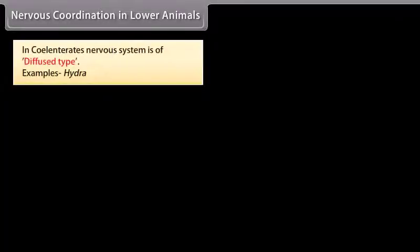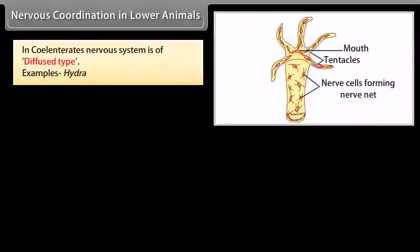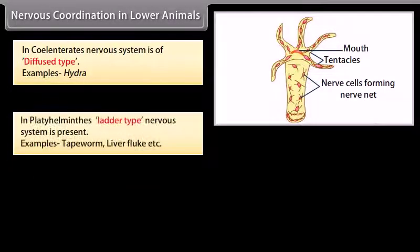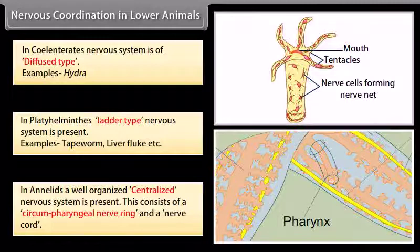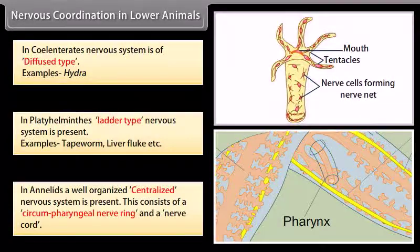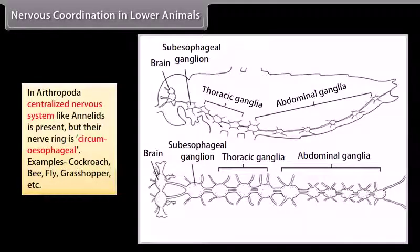In coelenterates, the nervous system is of diffused type — example: Hydra. In platyhelminthes, a ladder-type nervous system is present — examples: tapeworm, liver fluke. In annelids, a well-organized centralized nervous system is present, consisting of a circumfaryngeal nerve ring and a nerve cord. In arthropoda, a centralized nervous system like annelids is present, but their nerve ring is circumesophageal.